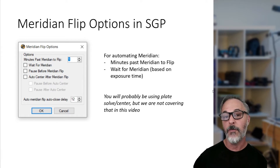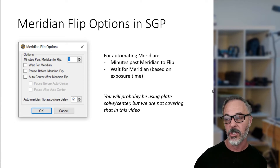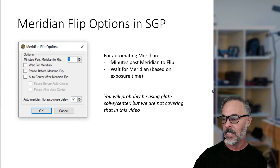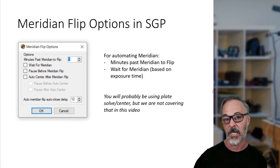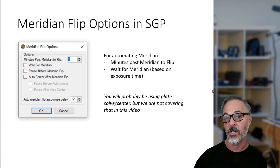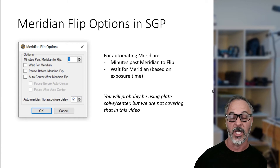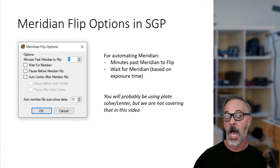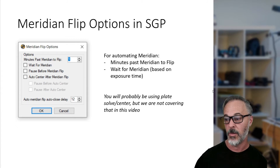So for automating the meridian flip, we are really going to focus on 'minutes past meridian to flip' and, to some extent, 'wait for meridian.' That will depend in part on your exposure times for your subs and how far your minutes past meridian to flip is set. I'll give you an example of that in a second to make it a bit more clear.